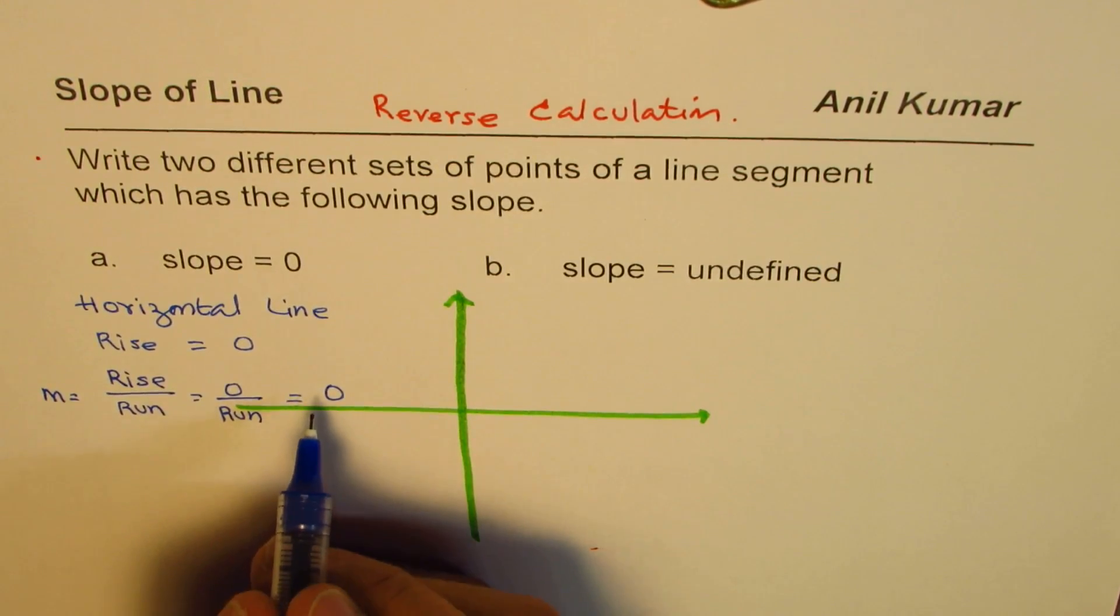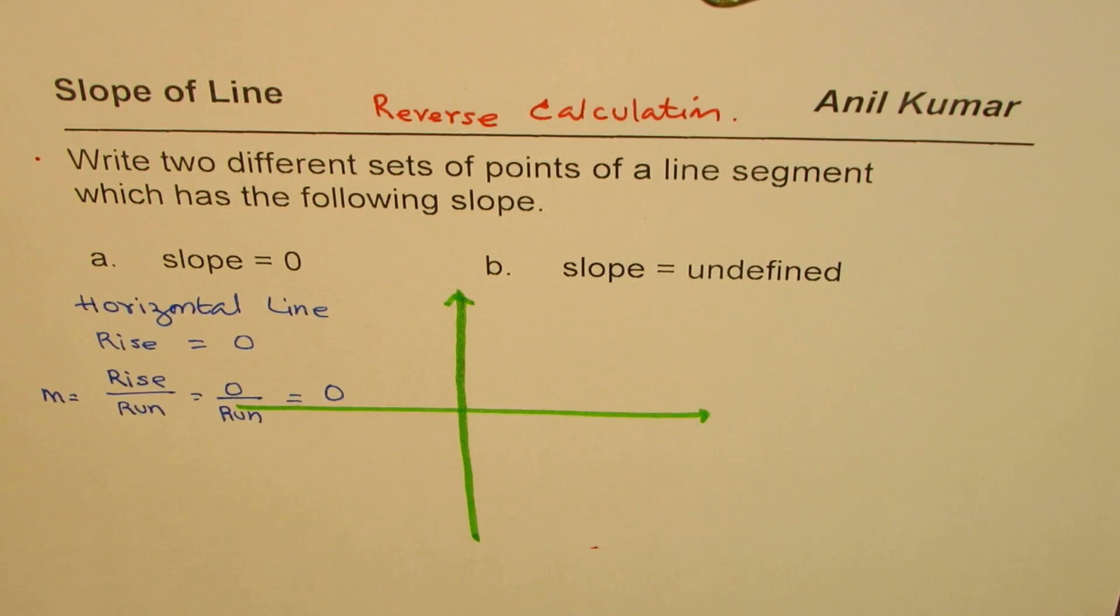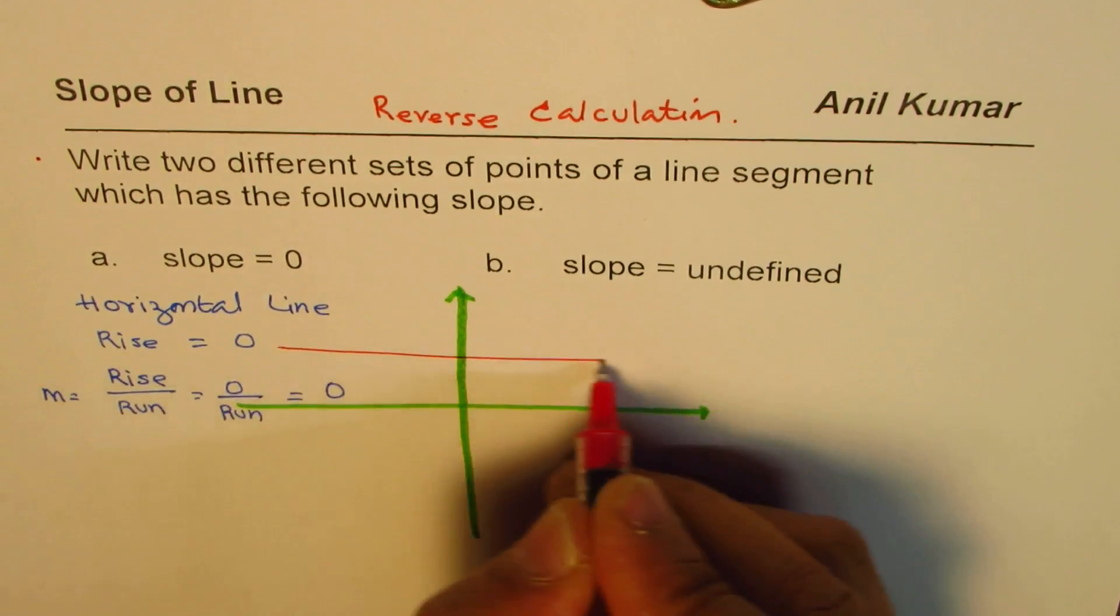That gives you that the slope of the line equals zero, which implies that you are working on a horizontal line. So that line could be kind of like this.